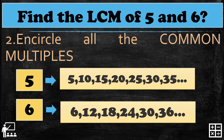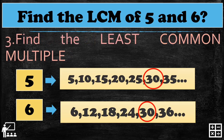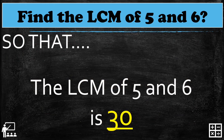Step 2: encircle all the common multiples. On this set, the common multiple is 30. If you extend the list, it will give more common multiples, but on the current set there is only 30. Since there is only one common multiple in the set, 30 is the least common multiple. The LCM of 5 and 6 is 30.